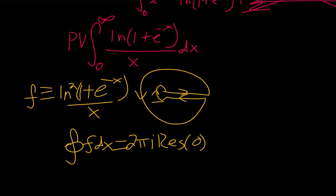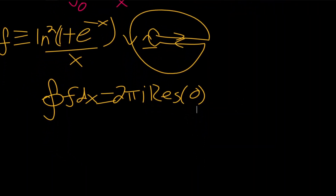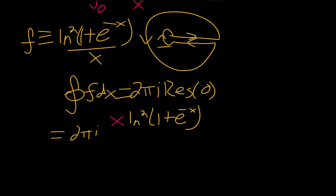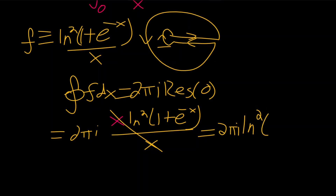Let's calculate that residue. By the definition of residue, we multiply by x to get 2πi times the natural log squared of 1 plus e to the minus x, and the x's cancel. Plugging in x equals 0, we get the natural log squared of 1 plus 1, which is the natural log squared of 2. So the residue theorem gives us 2πi times the natural log squared of 2.